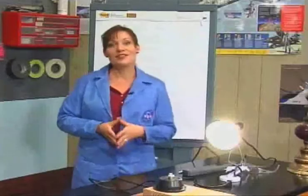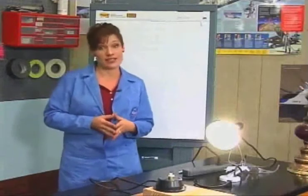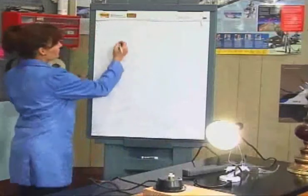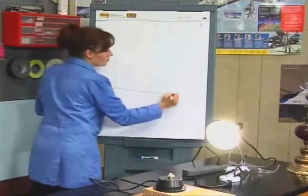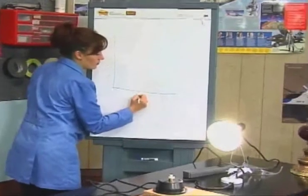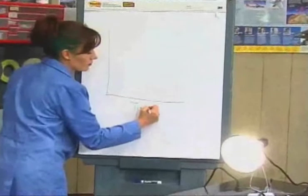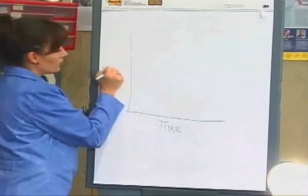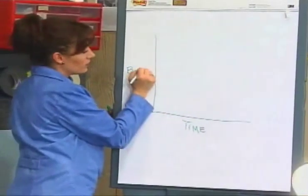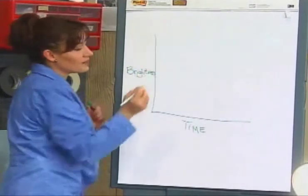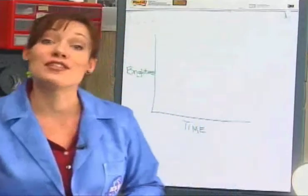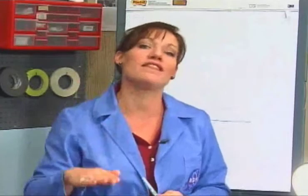Next, students make a graphical estimate of the fraction of the potato seen versus time. You can make this easier for students by having them raise their hand to the highest position when they see maximum brightness and to the lowest position when they see the least brightness. Student partners record and trace the path of motion of the observer's hand.